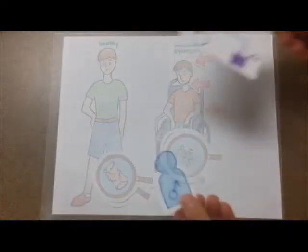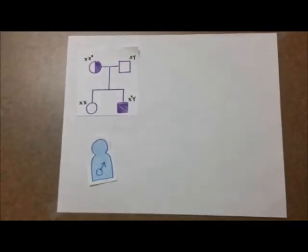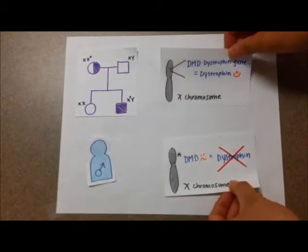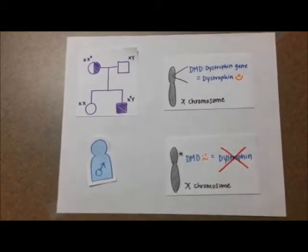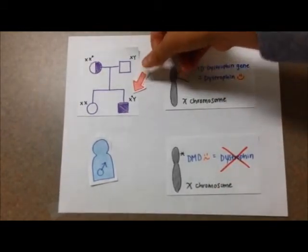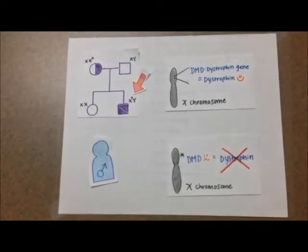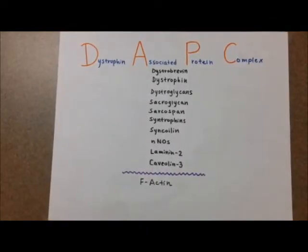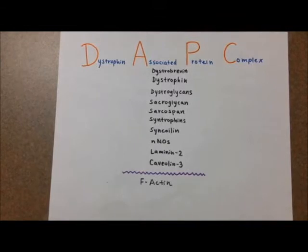Duchenne mutations are recessive and primarily prevalent in males. This is because Duchenne is an X-linked recessive gene. Males are more likely to show symptoms because they only possess one X chromosome. Many different proteins are involved in the dystrophin-associated protein complex, which is essential for muscle growth and maintenance.